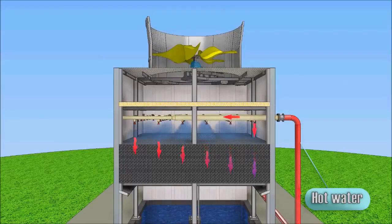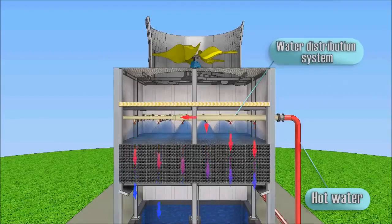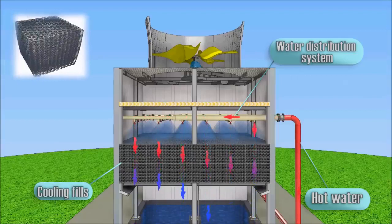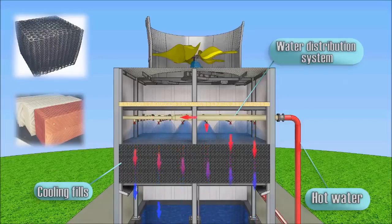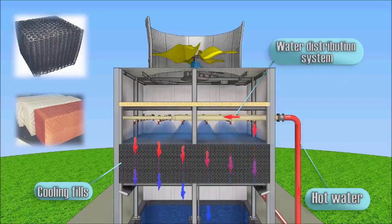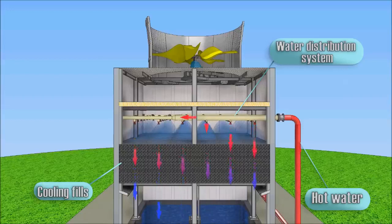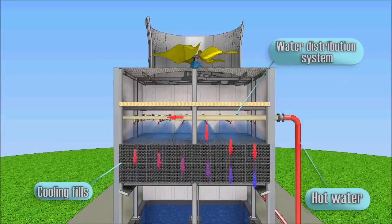Hot water from various sources such as machines or heating processes flows through pipes to the distribution system of the cooling tower, which produces even water distribution to all the area of fills by spray nozzles. On the fills, a water film is formed on the surface, from which evaporation occurs as it encounters the airflow. The larger the surface area of the fills, the more intensive the evaporation and the more efficient the cooling tower.